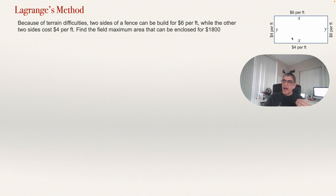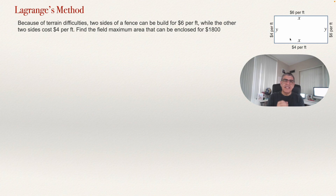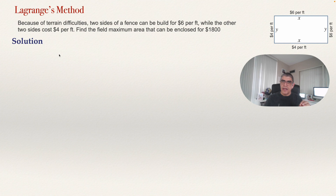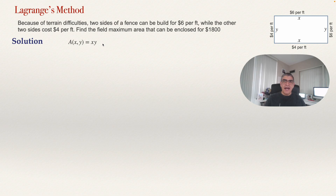Now that we have the variables, let's see what function we are going to maximize and what function defines the constraint. The function that we want to maximize is the area, and we know that the area is X times Y — this is a rectangle. So we have the area in terms of two variables X and Y, and this is the function we want to maximize.